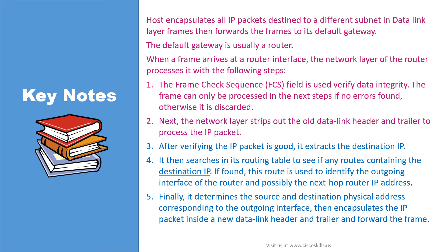Next, the network layer strips out the old data link header and trailer to process the IP packet. After verifying the IP packet is good, it extracts the destination IP. It then searches its routing table to see if any routes contain the destination IP. If found, this route is used to identify the outgoing interface of the router and possibly the next hop IP address. Finally, it determines the source and destination physical addresses corresponding to the outgoing interface, then encapsulates the IP packet inside a new data link header and trailer and forwards the frame, which ends the routing process.